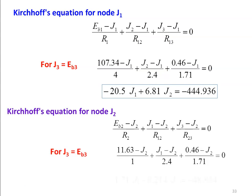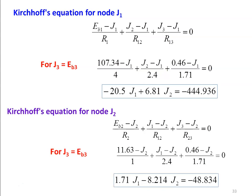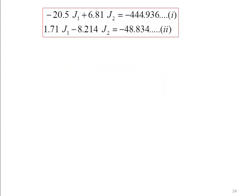Similarly, Kirchhoff's equation for node J2: (Eb2 minus J2) divided by R2 plus (J1 minus J2) divided by R12 plus (J3 minus J2) divided by R23 equals 0, and J3 equals Eb3. Substituting: (11.63 minus J2) divided by 1 plus (J1 minus J2) divided by 2.4 plus (0.46 minus J2) divided by 1.71 equals 0. Solving: 1.71 J1 minus 8.214 J2 equals minus 48.834. So we have two equations: minus 20.5 J1 plus 6.81 J2 equals minus 444.936, and 1.71 J1 minus 8.214 J2 equals minus 48.834.